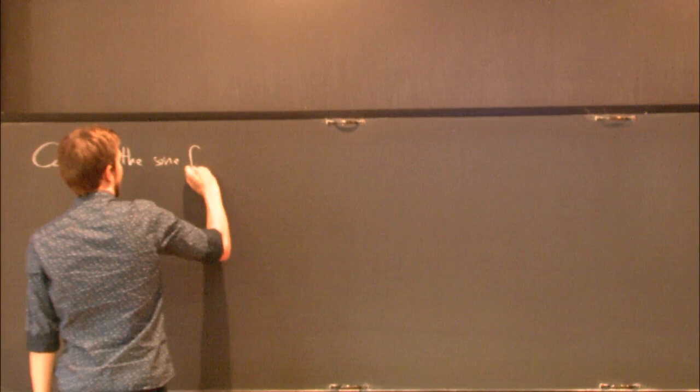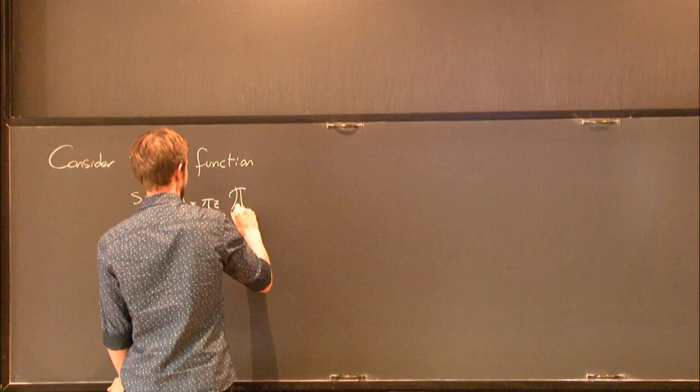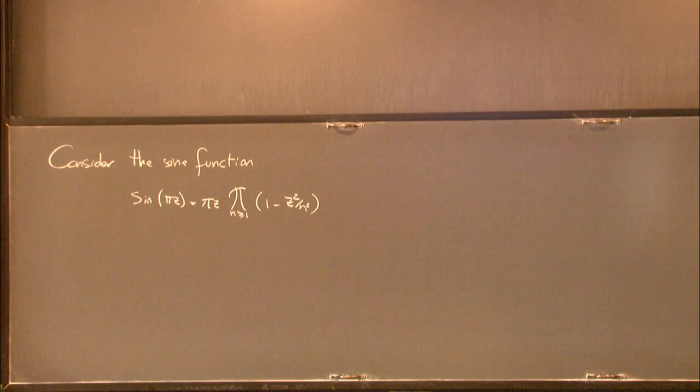Let us begin by considering a sine function, and I'll introduce the sine function as an explicit infinite product. Of course, this infinite product has a very long history, and famously it was used by Euler to evaluate the Riemann zeta function at even numbers.